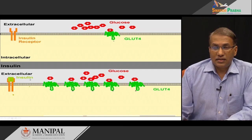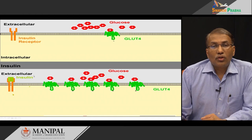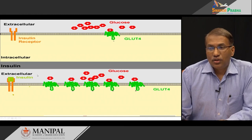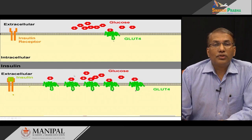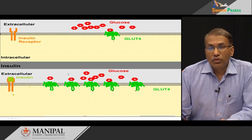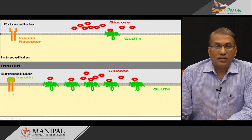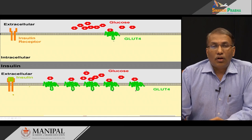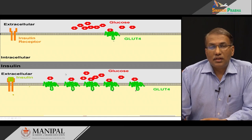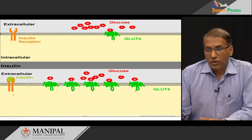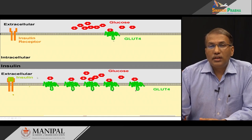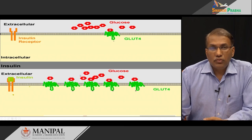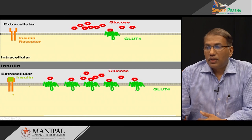Imagine that when insulin is released — and please note insulin is released only when glucose concentration goes very high, not otherwise — when insulin is released that means there is a dangerously large amount of glucose floating in the system, so there is a need to remove it fast. Immediately insulin influences the recruitment of more GLUT4 onto the surface epithelium, and there will be more rapid absorption of glucose from the blood into the muscle or adipose tissue. So it not only increases the rate of absorption, it also increases the number of transporters available on the surface. This is how insulin facilitates rapid removal of glucose from the blood into adipose tissue or muscle.